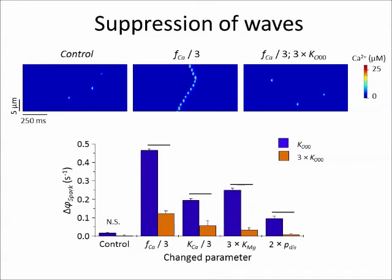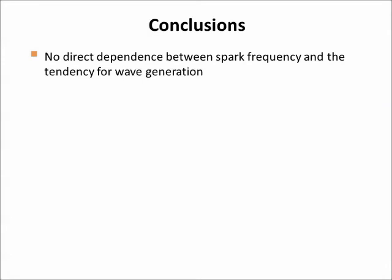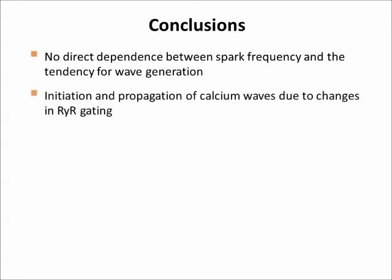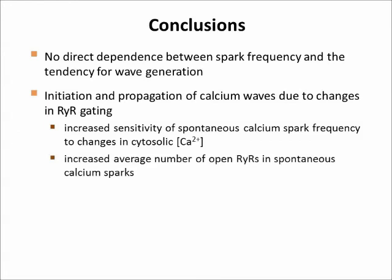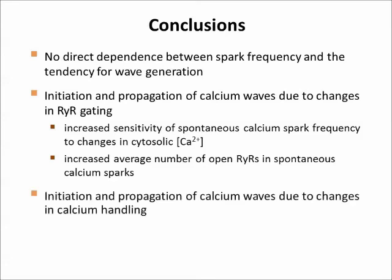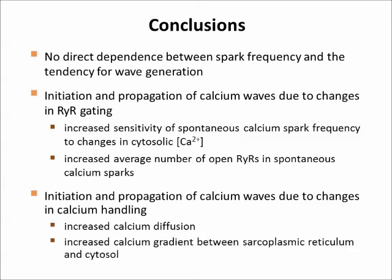Our results show that spark frequency and the propensity to form calcium waves are not directly correlated. Changes in ryanodine receptor gating participate in calcium wave generation by increasing the calcium sensitivity of the frequency of spontaneous sparks, which occurs at low cytosolic calcium when binding of calcium to the activation site is facilitated, or when its allosteric effect on channel opening is increased. It also occurs when the number of RYRs that open during the spark is increased, such as when the dissociation of magnesium ion from the activation site is speeded up. Apart from changes in ryanodine receptor gating, propensity to calcium waves is increased by facilitated spatial spread of calcium from a release site to its neighbor, such as with increased calcium diffusion coefficient, increased calcium release flux, and increased time constant of calcium uptake.